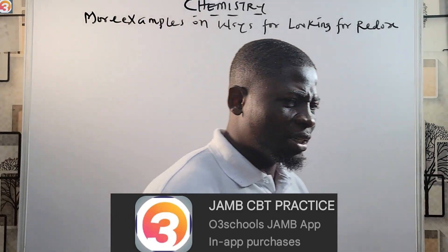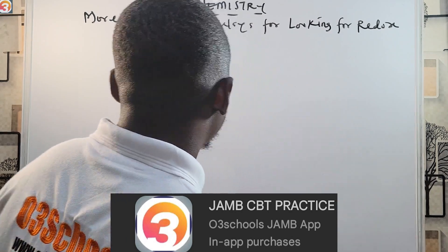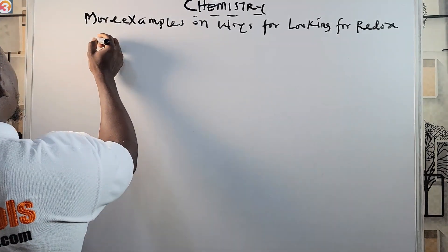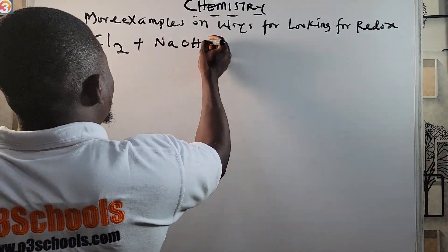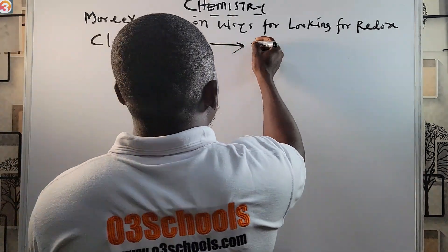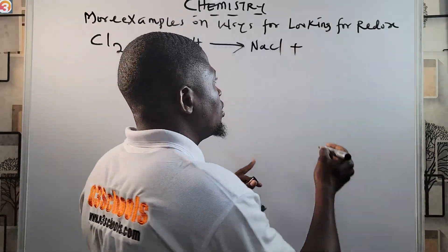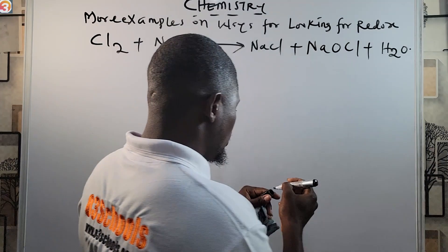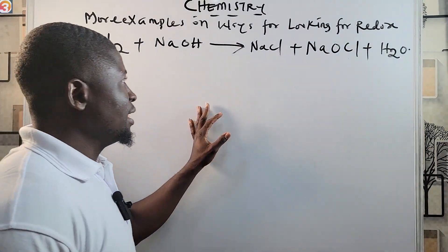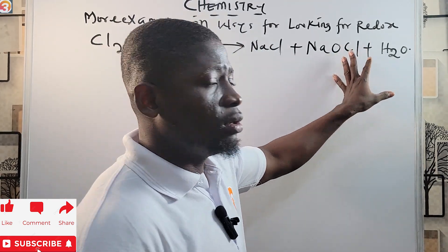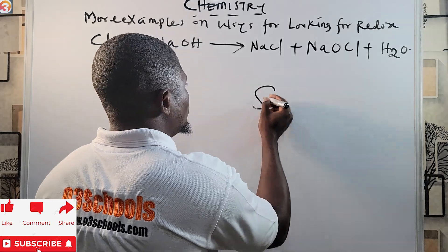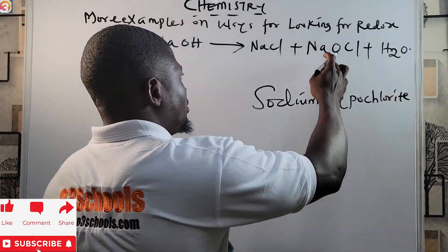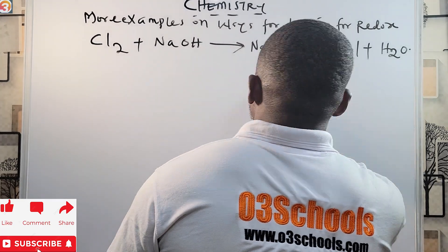Now let's go back to what brought us here today — more ways of looking for redox in reactions. I'll use this example: the reaction between chlorine and sodium hydroxide. Cl₂ plus NaOH gives sodium chloride NaCl, plus a special salt called sodium hypochlorite NaOCl, plus water H₂O.